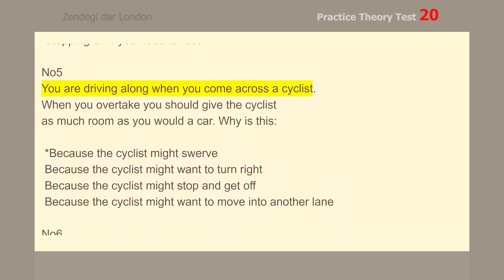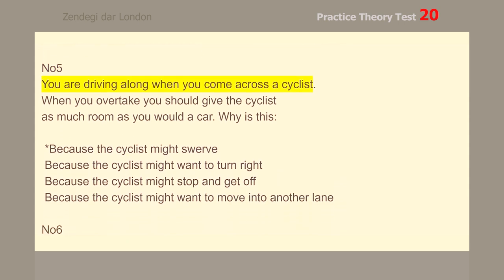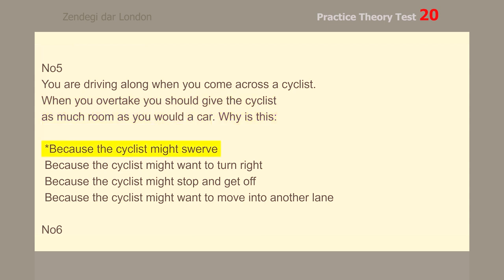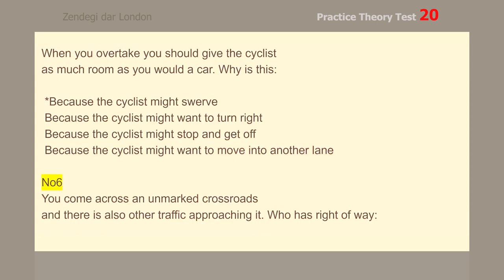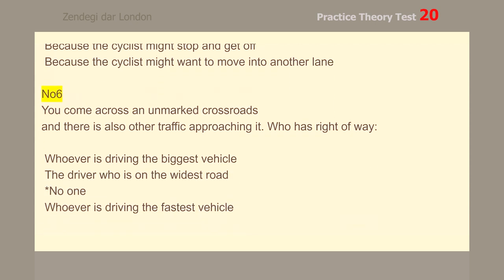Number 5. You are driving along when you come across a cyclist. When you overtake, you should give the cyclist as much room as you would a car. Why? Because the cyclist might swerve.